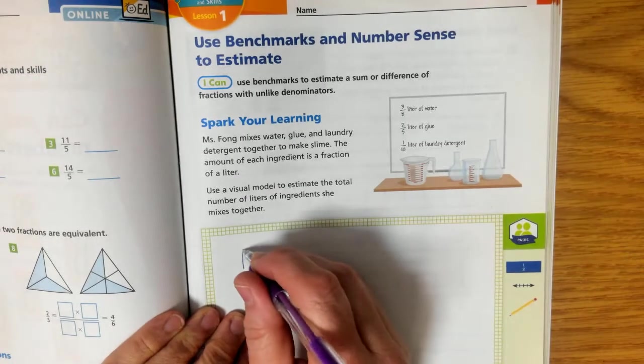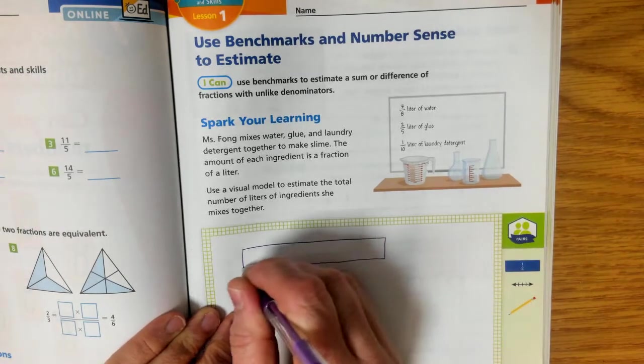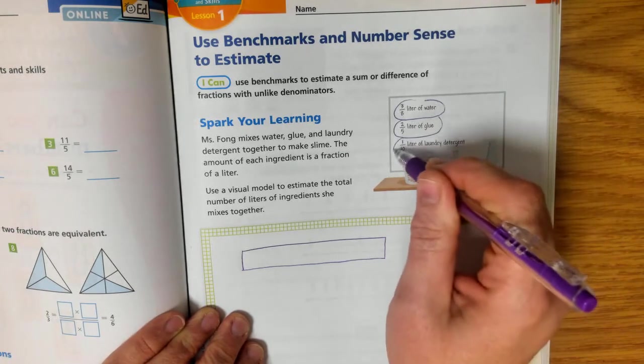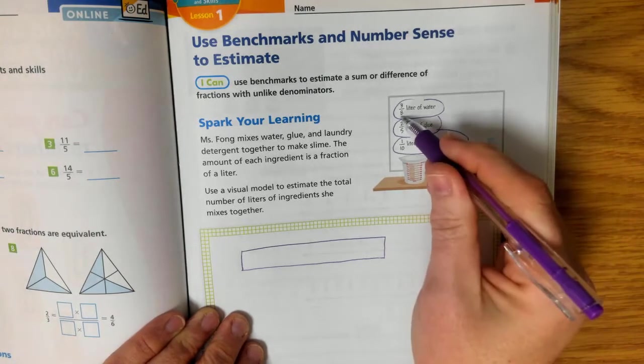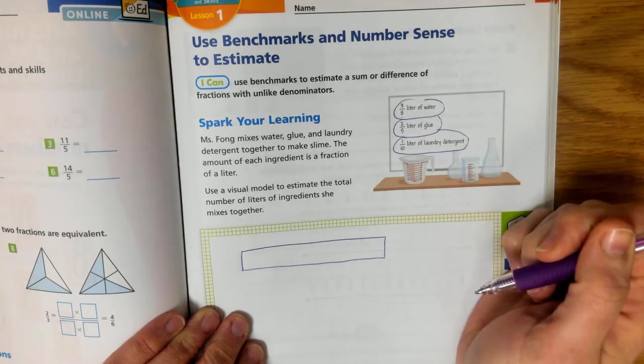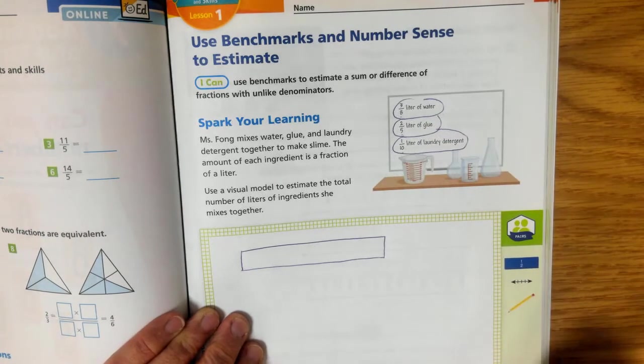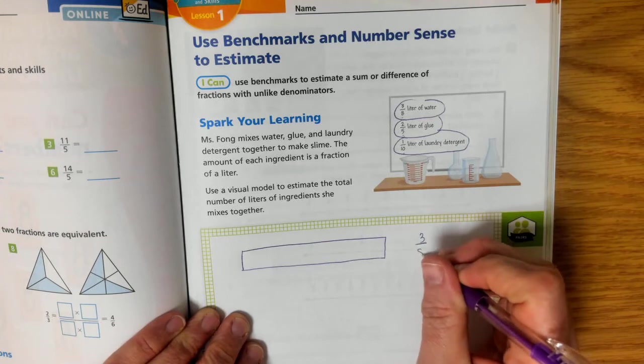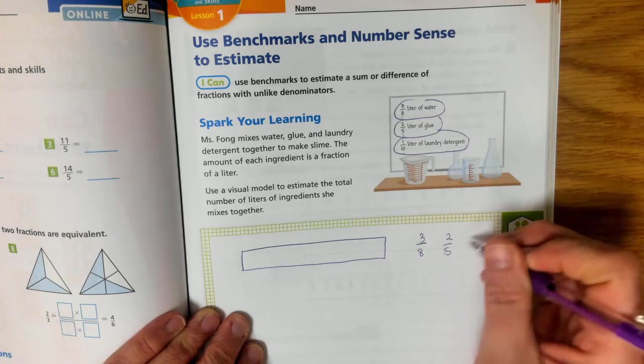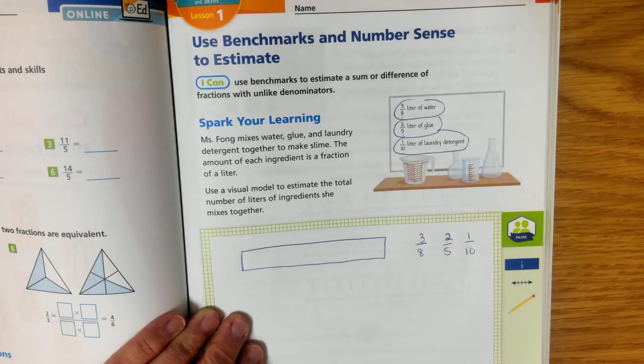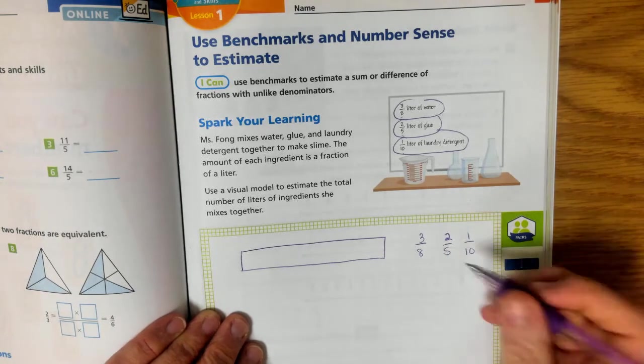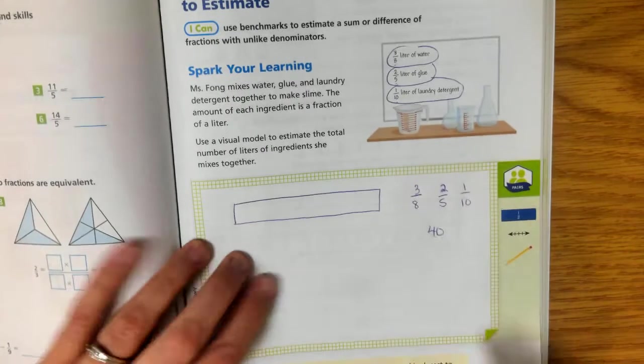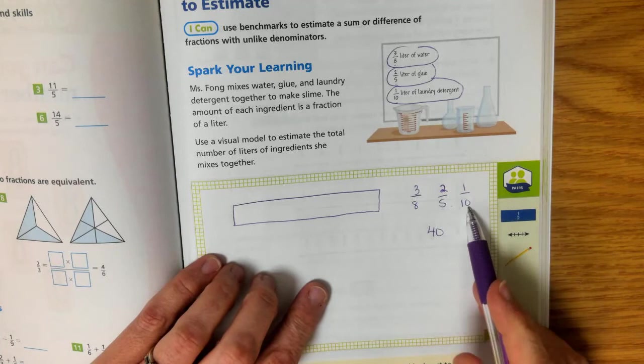Alright, so if we have our whole amount, and we can see that she has 3 eighths water, 2 fifths glue, 1 tenths laundry detergent. So none of our denominators make sense, right? None of our denominators work for us, but we can find a common denominator. If I look at my 8, my 5, and my 10. So I have 3 eighths, 2 fifths, 1 tenths. Remember when we talked before about finding a common denominator? So something that these all have in common, to me, looks like it's 40. Because if I multiply 8 times 5, I get 40. 5 times 8, I get 40. And 10 times 4, I get 40.